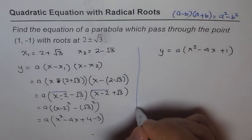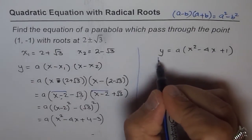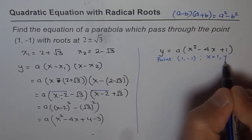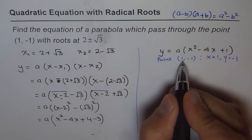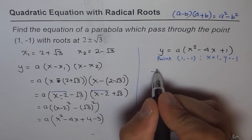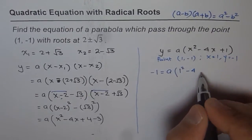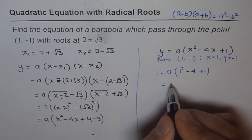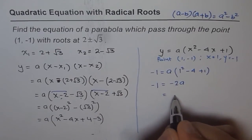Now we need to find the value of a. To find a, we use the given point (1, -1), which means x equals 1 and y equals -1. Substituting: -1 equals a times (1 squared minus 4 times 1 plus 1), which gives -1 equals a times (1 minus 4 plus 1) equals a times (-2). So -2a equals -1, and dividing by -2 gives a equals one half.